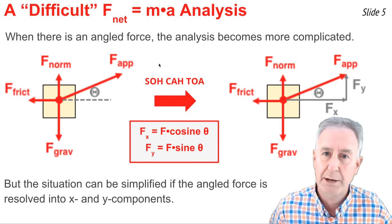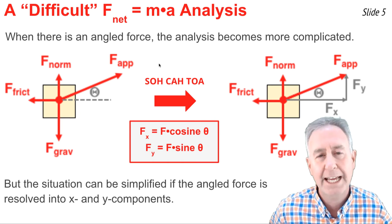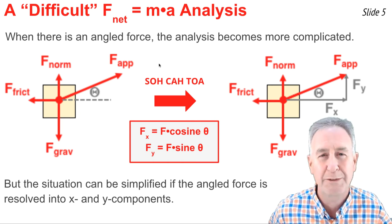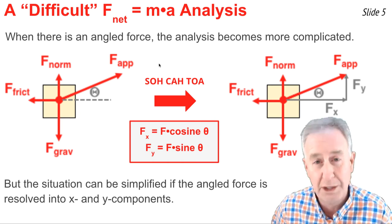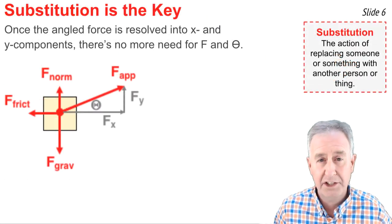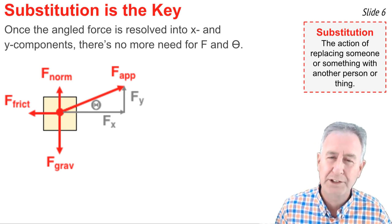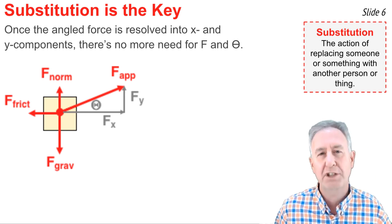Now the difference is I'm replacing the vector that goes at an angle with its parts, Fx and Fy, and I can easily find the magnitude of those parts using these equations that I just discussed. The key to doing these types of analyses centers around the concepts of vector resolution and vector components and the idea of substitution.